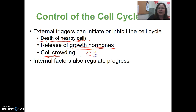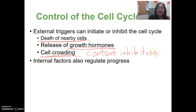Cell crowding causes contact inhibition, which will inhibit the cell cycle. This is important because cancer cells have no contact inhibition — just because they're crowded, they'll still keep growing. There are also internal factors that can regulate the cell cycle.